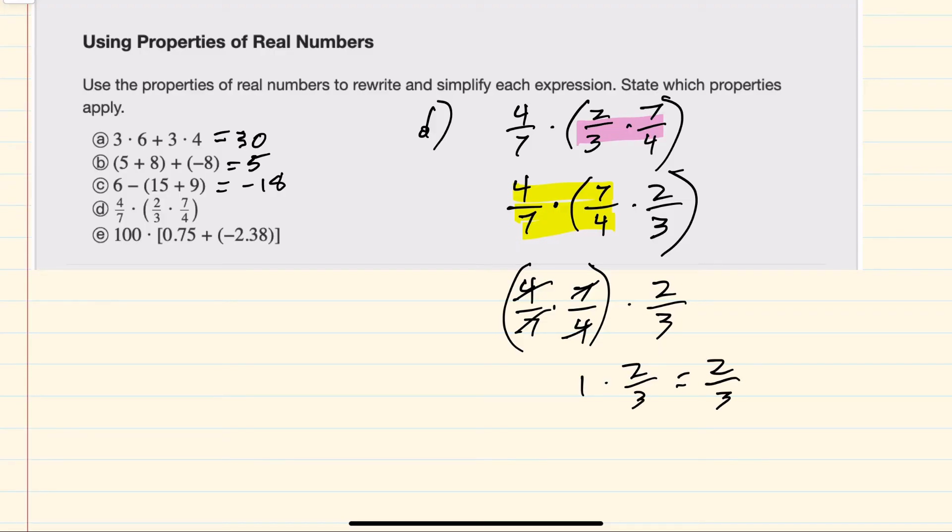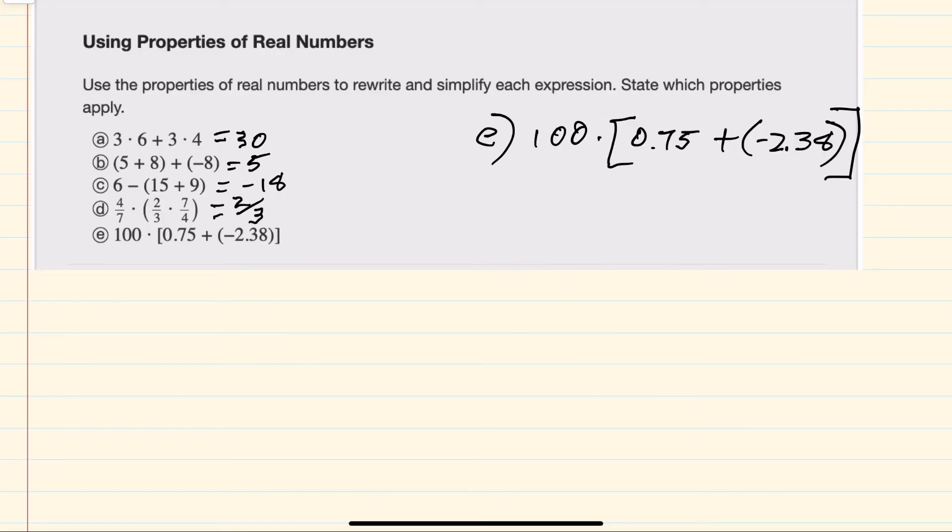For E, I have multiplication outside and addition inside, so I can distribute this 100. Multiplying 100 times 0.75 would give me a 75 plus,